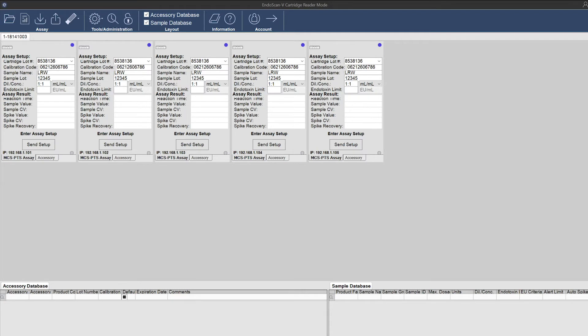Using EndoScan-V, within the first box, enter the lot number, which is the cartridge lot number on the certificate of analysis supplied with the cartridge, calibration code, sample lot number, dilution factor, and endotoxin limit if applicable. After entering your information, you are now ready to add your sample. Select Send Setup with EndoScan-V.